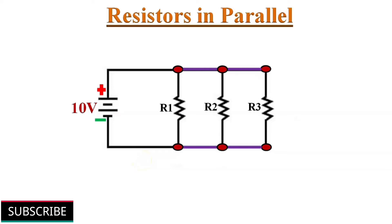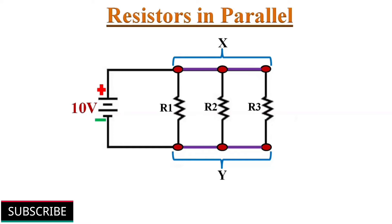Now let's see what happens when a few resistors are connected in parallel. Here we have three resistors R1, R2, and R3 in parallel combination with 10 volts applied across them. All three resistors are connected between two common lines — let's call them X and Y — which are directly connected to the 10-volt source. Hence the voltage drop across each resistor will also be 10 volts. So in a parallel combination, the voltage drop across each resistor is equal.